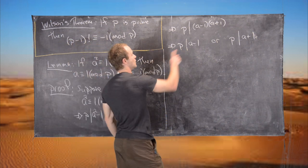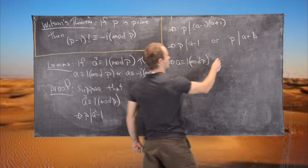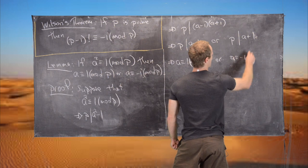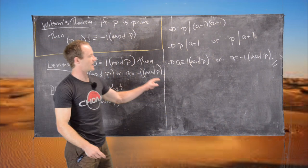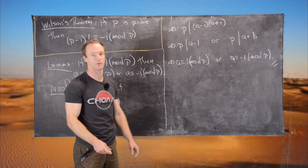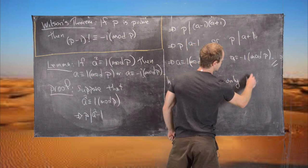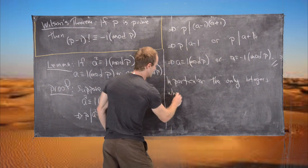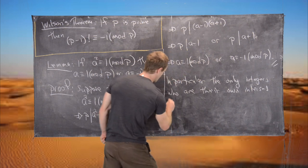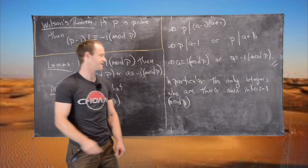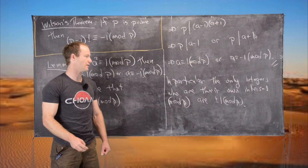Let's look at what each case gives us. From p divides a minus 1, it follows that a is congruent to 1 mod p. From p divides a plus 1, it follows that a is congruent to negative 1 mod p. That's the end of the proof, because that's what we wanted to end up with. In particular, the only integers that are their own multiplicative inverses mod p are plus and minus 1 mod p — when you reduce them mod p, you either get plus 1 or minus 1.